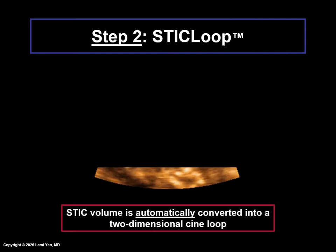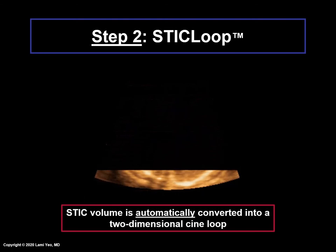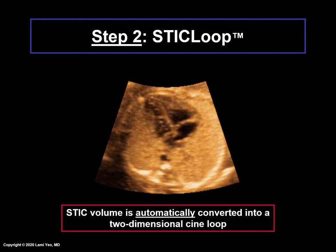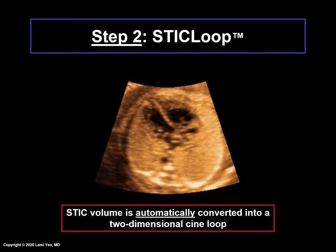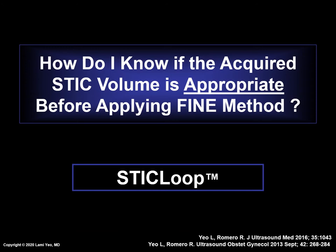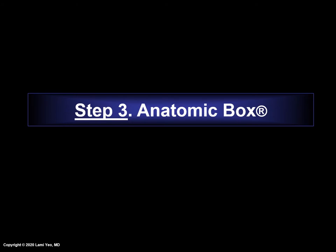The second step is STIC loop. Once a STIC volume has been acquired, FINE automatically converts the volume into a two-dimensional cine loop that scrolls in a continuous fashion — this is why it is known as STIC loop. This tool aids the user in determining the appropriateness of STIC volumes before applying the FINE method. Using STIC loop, the operator observes whether or not certain criteria are met.